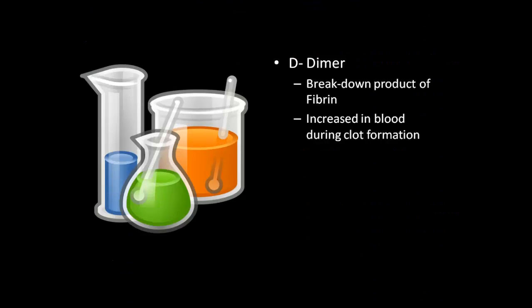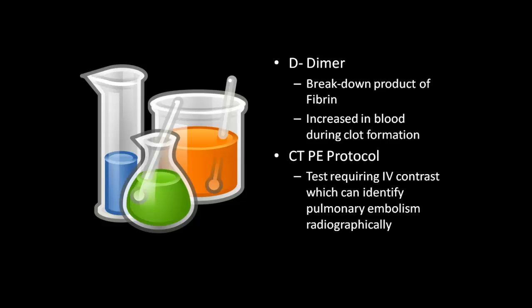So we need to decide on a test. We can do a D-dimer, which is a breakdown product of fibrin or of blood clots, and it's increased in the blood during clot formation. Unfortunately, there are several different things that can increase D-dimer levels in the blood. There's another test called a CTPE protocol — a CAT scan of the chest with IV contrast — which can identify if there are clots in the pulmonary arteries. We'll limit it to these two tests for this discussion.